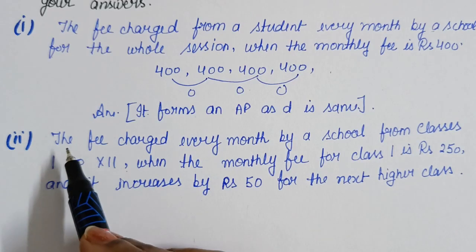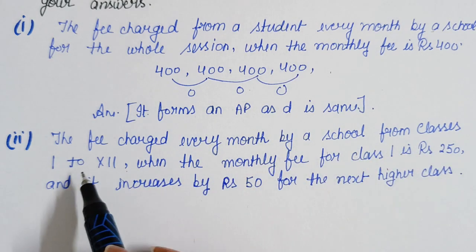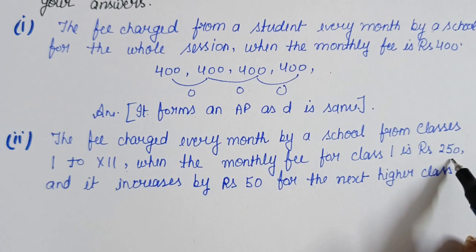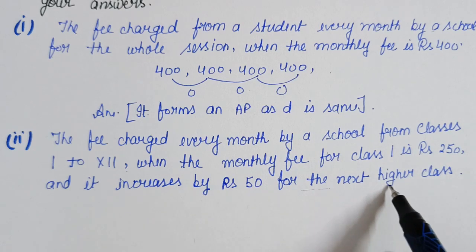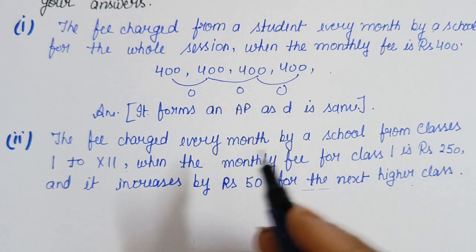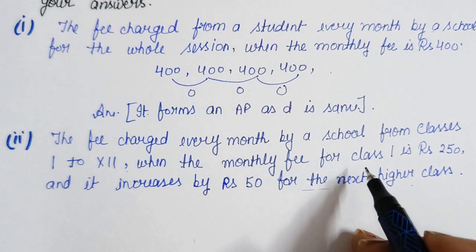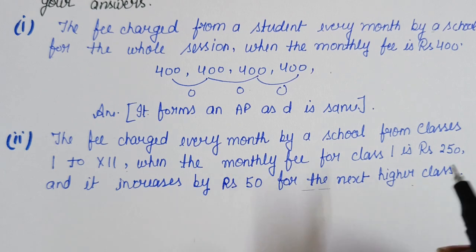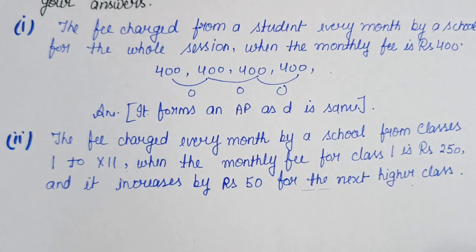The second part: the fee charged every month by a school from classes 1st to 12th, when the monthly fee for class 1 is Rs. 250 and it increases by Rs. 50 for the next higher classes. So every year as a child goes to a higher class, the fee increases by Rs. 50.